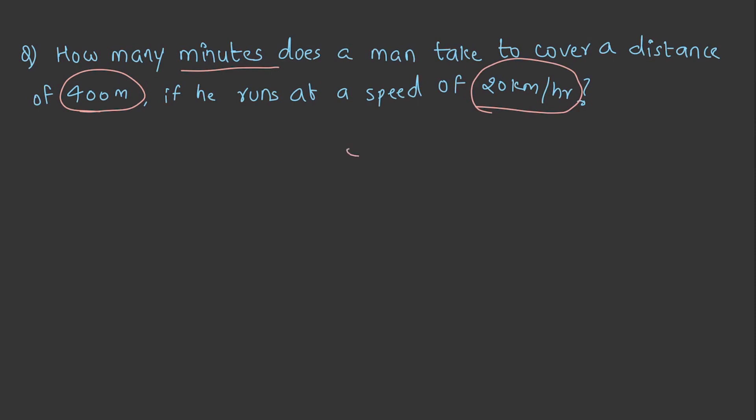That is a man is running with 20 kilometers per hour and he covered 400 meters of distance. In how much time? So let's solve this.